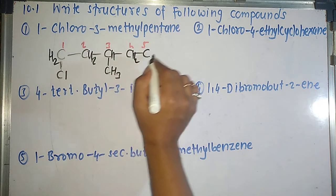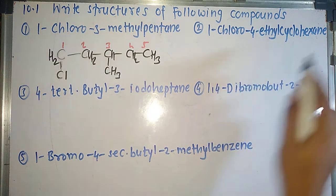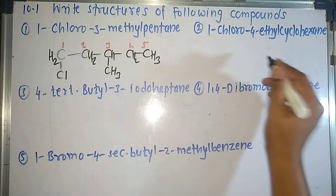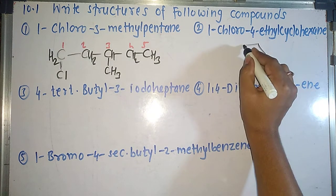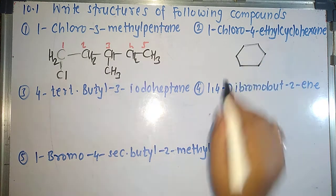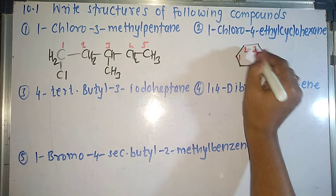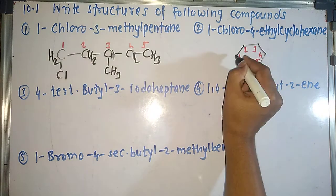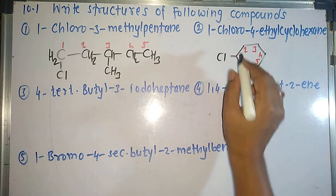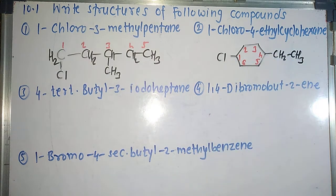The rest are hydrogens: CH₂, CH₂, CH, CH₂, CH₃. Now in the same way we are having 1-chloro-4-ethylcyclohexane. Cyclohexane means we are having a cyclic six-membered ring. I can start numbering from any carbon atom: 1, 2, 3, 4, 5, 6. At position 1 I'm having chlorine, so I will write Cl here. At position 4 I'm having ethyl, that is CH₂CH₃.